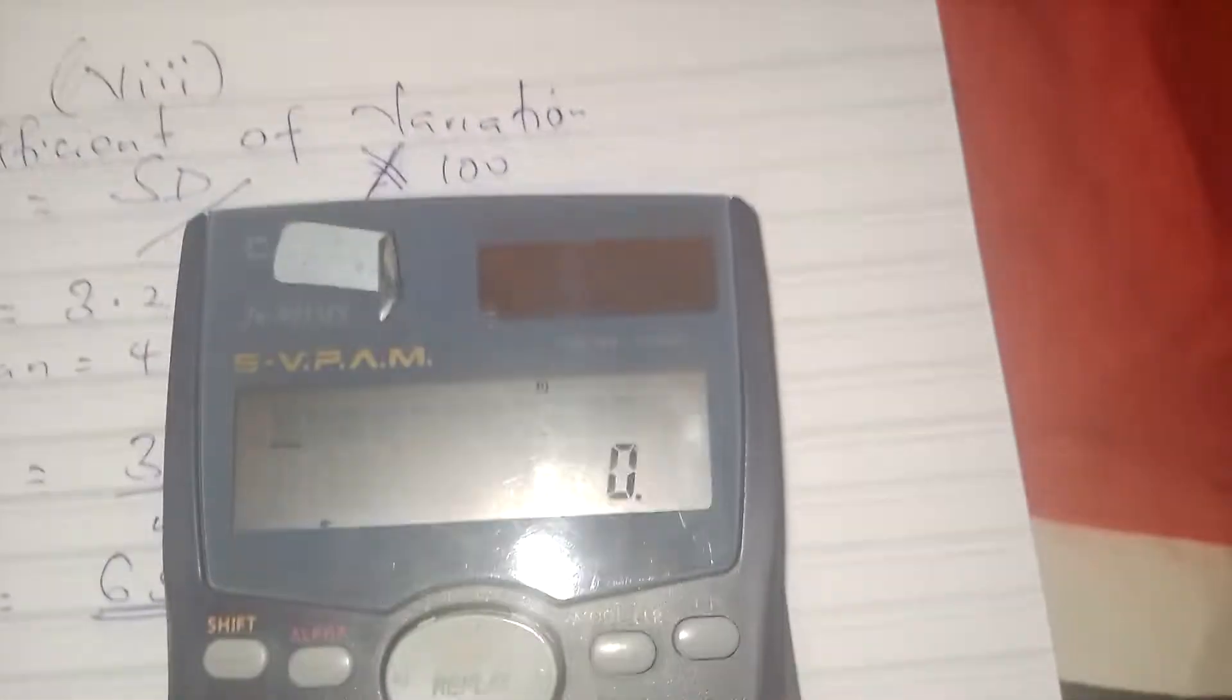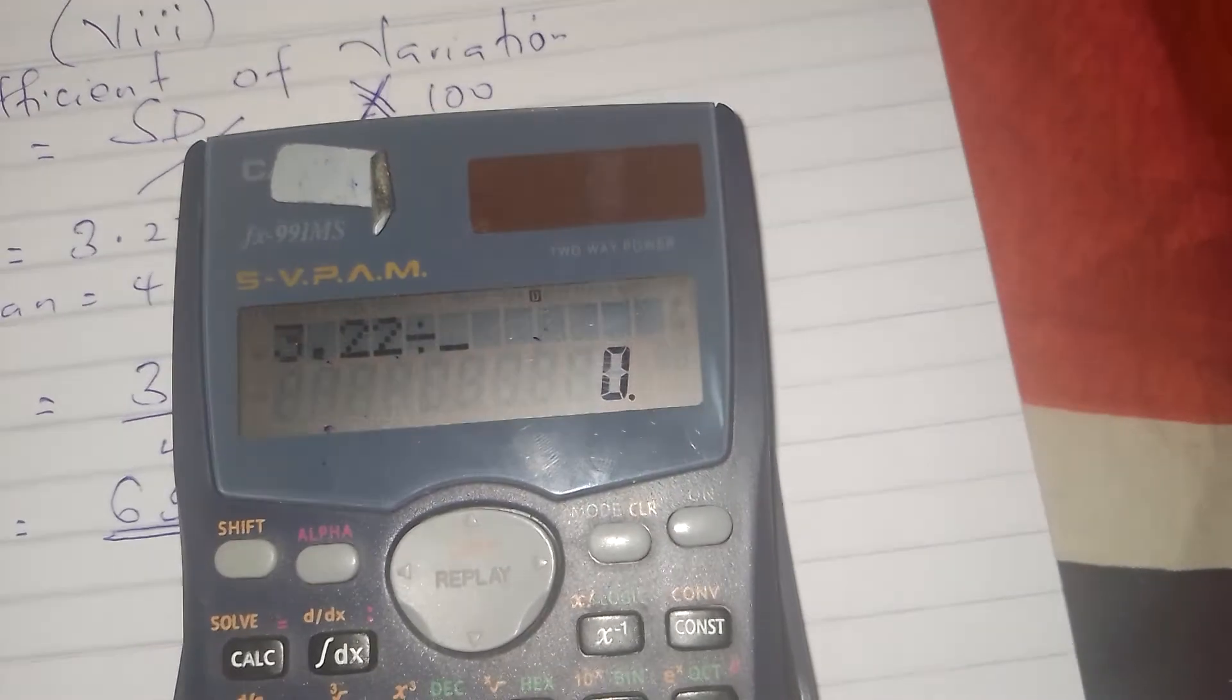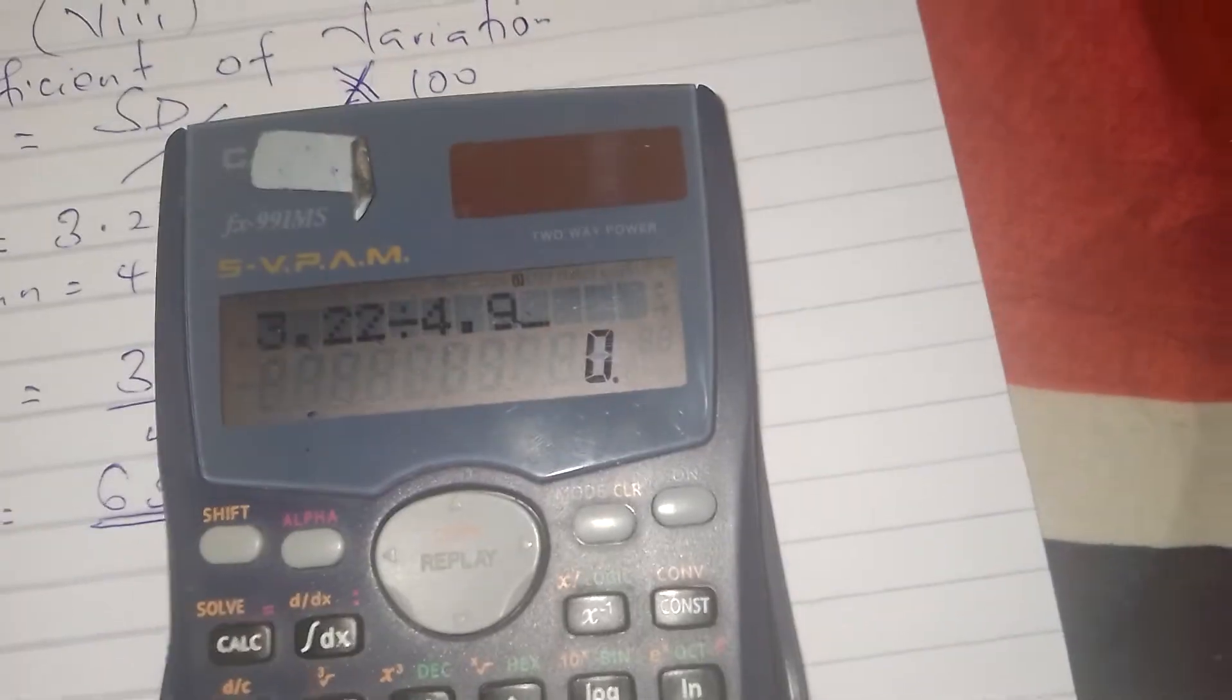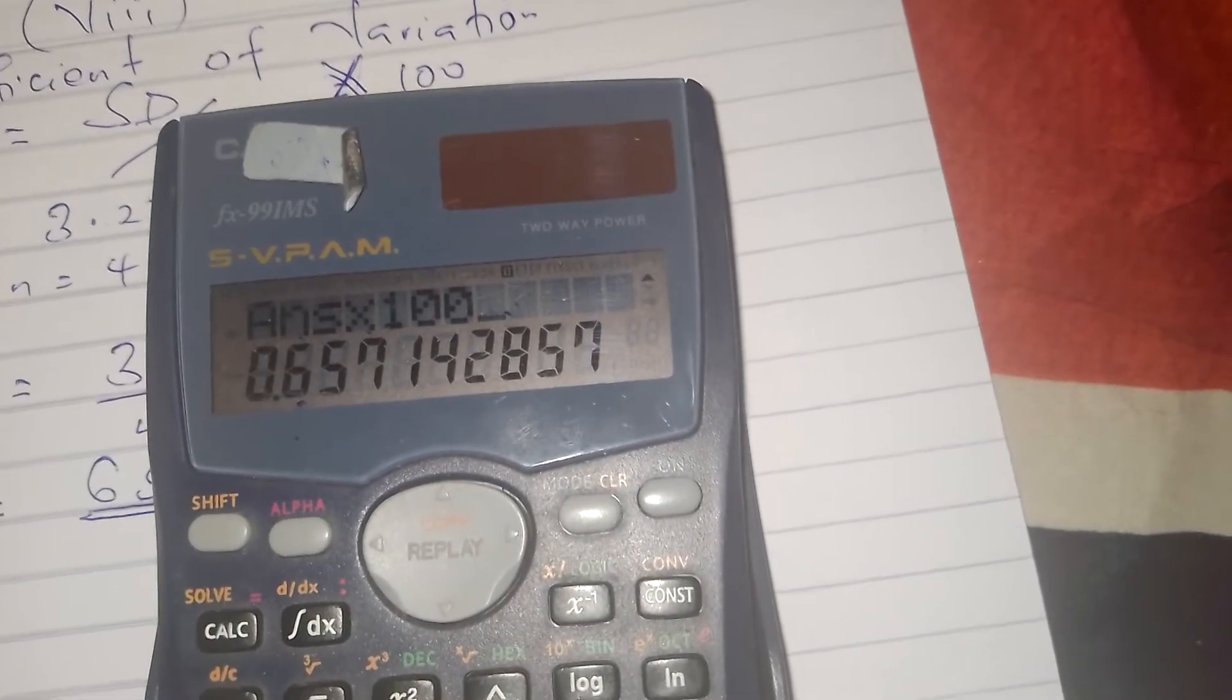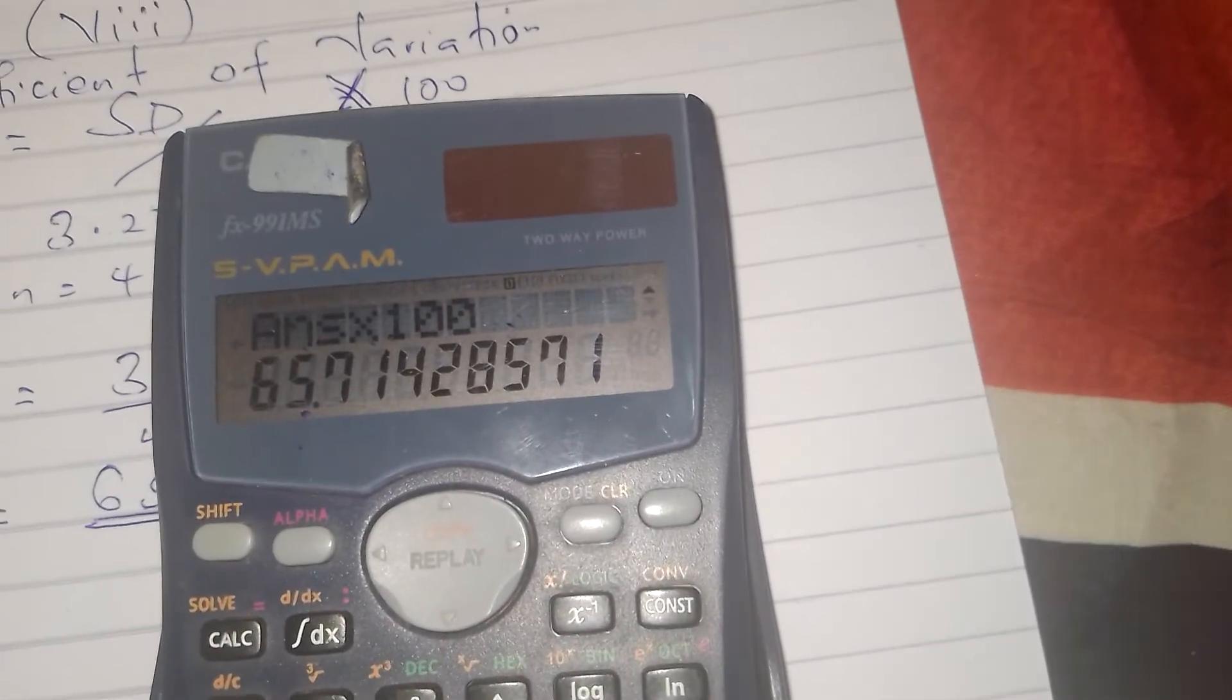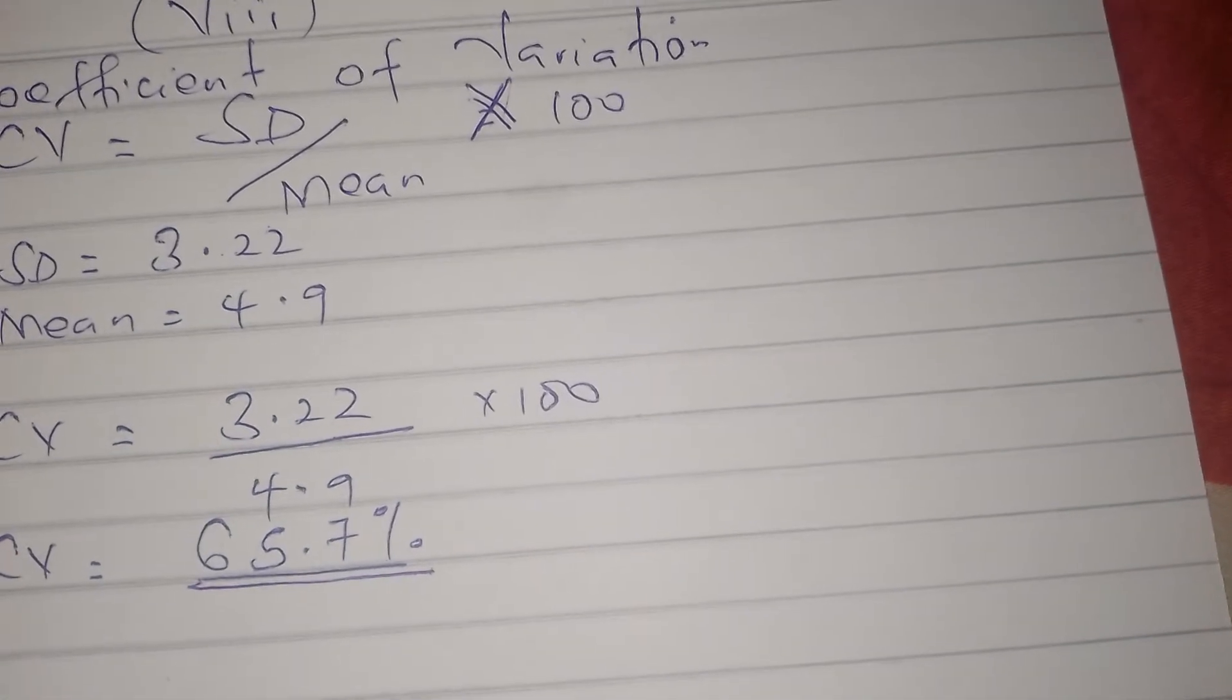So we put it on the calculator. 3.22 divided by 4.9 times 100, which is 65.7. So 65.7 is our coefficient of variation.